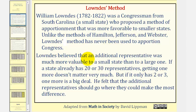Lowndes believed that an additional representative was much more valuable to a small state than to a large one. If a state already has 20 or 30 representatives, getting one more doesn't matter very much. But if it only has two or three, one more is a big deal. He felt that the additional representative should go where they could make the most difference.